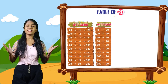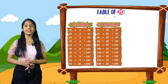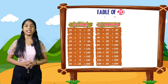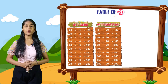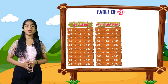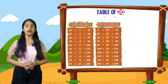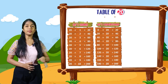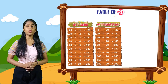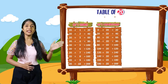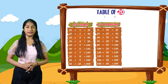So now let's understand. 0 plus 20 is equal to 20. 20 plus 20 is equal to 40. 40 plus 20 is equal to 60. 60 plus 20 is equal to 80. 80 plus 20 is equal to 100. 100 plus 20 is equal to 120. 120 plus 20 is equal to 140. 140 plus 20 is equal to 160. 160 plus 20 is equal to 180. 180 plus 20 is equal to 200.